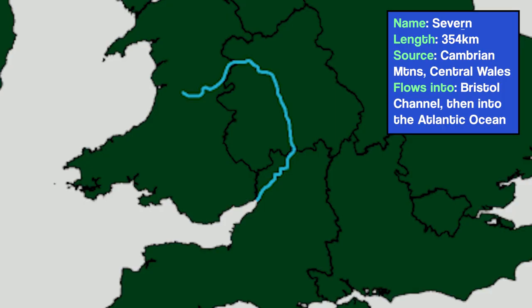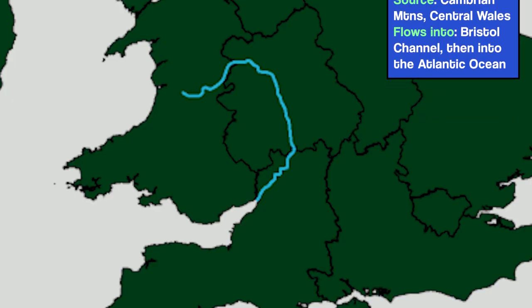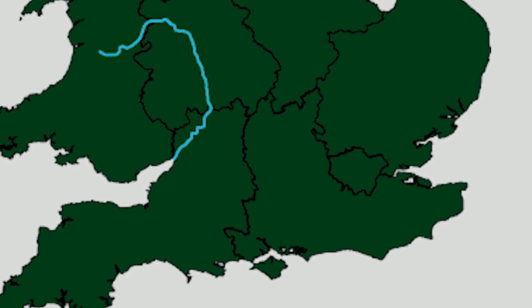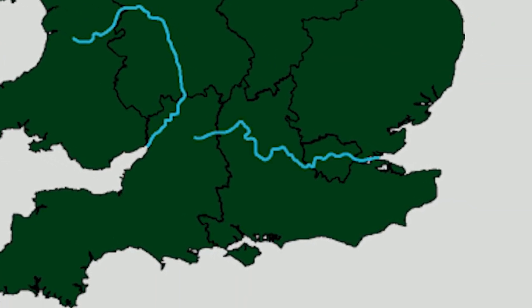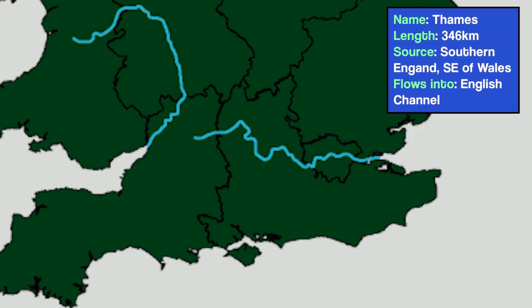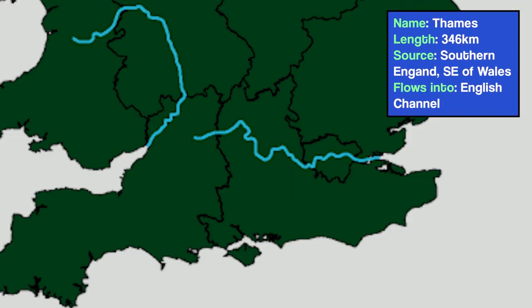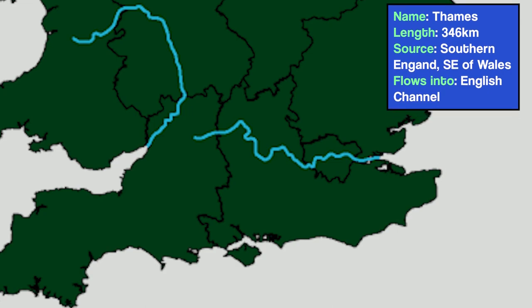The source of the River Severn is deep within the Cambrian Mountains in Wales. From there, it flows east into England, then south, and then south-west, where the mouth of the river flows into the Bristol Channel. A very close second is the River Thames at 346 kilometres long. The source of the Thames can be found in southern England, southeast of the border with Wales. From there, it flows eastwards and famously passes through London before emptying into the North Sea.